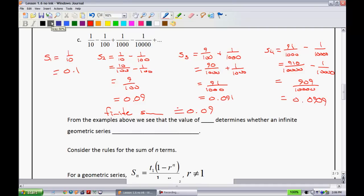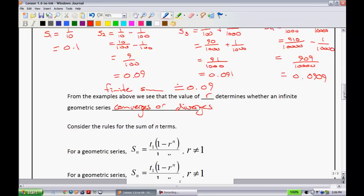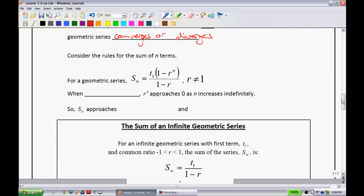From the examples that we just did, we see that the value of R determines whether an infinite geometric series converges or diverges. And of course, R being the common ratio.